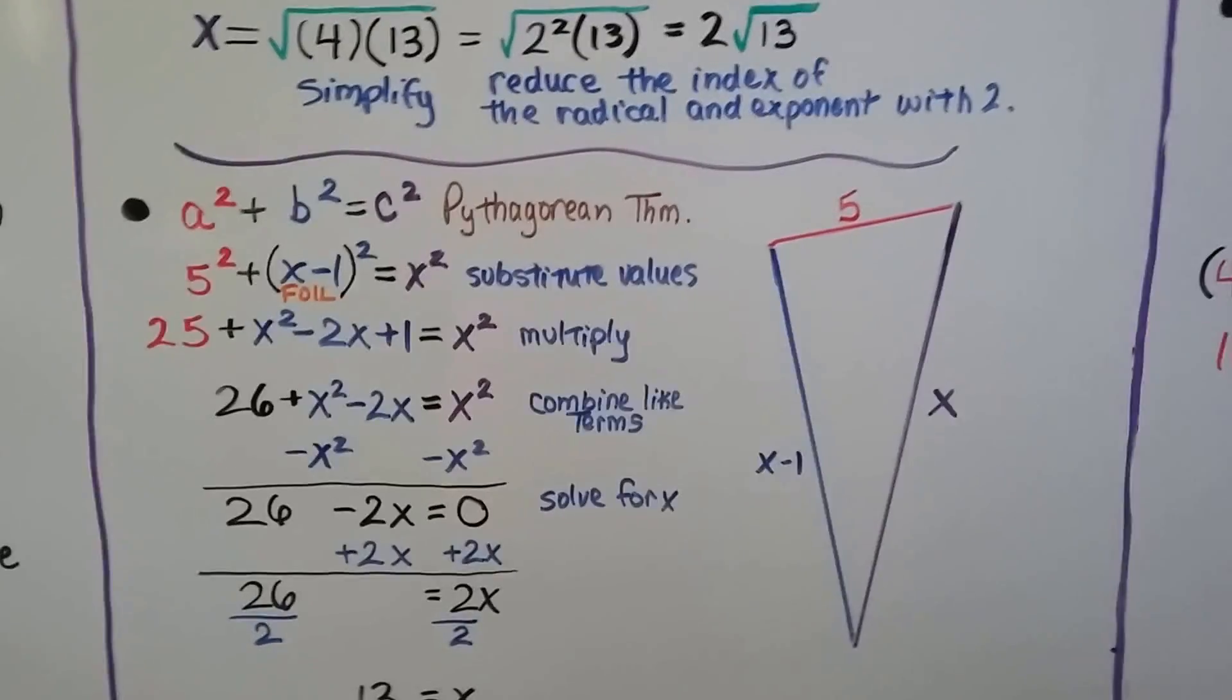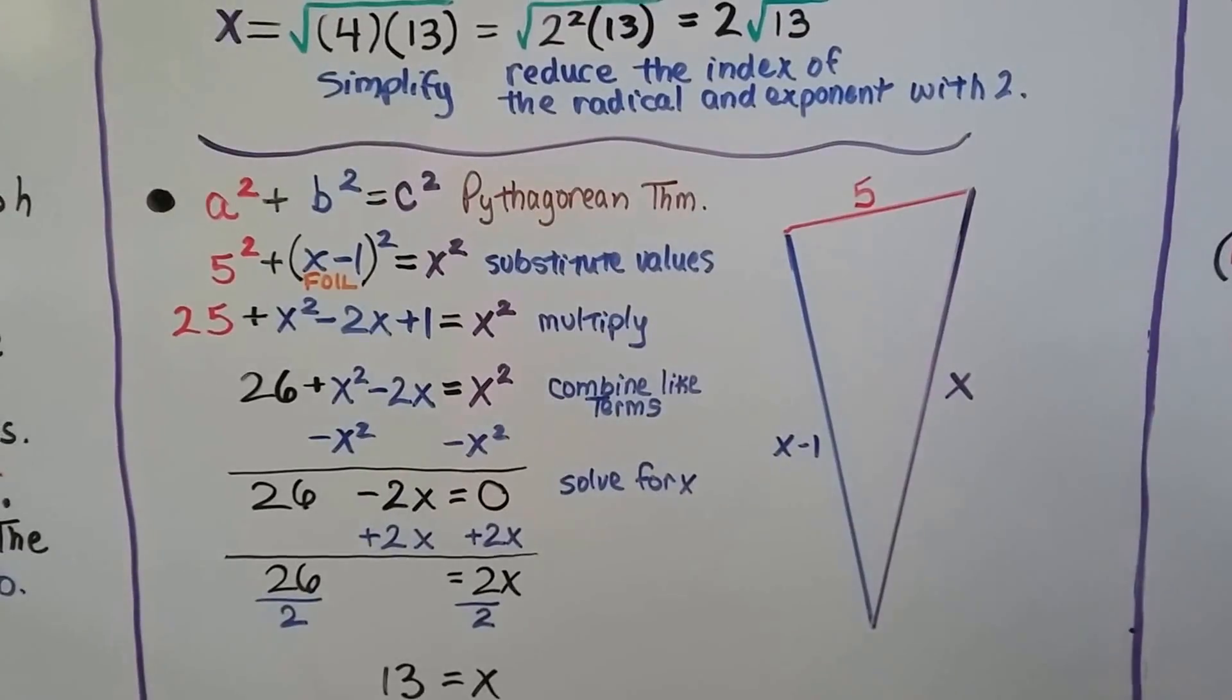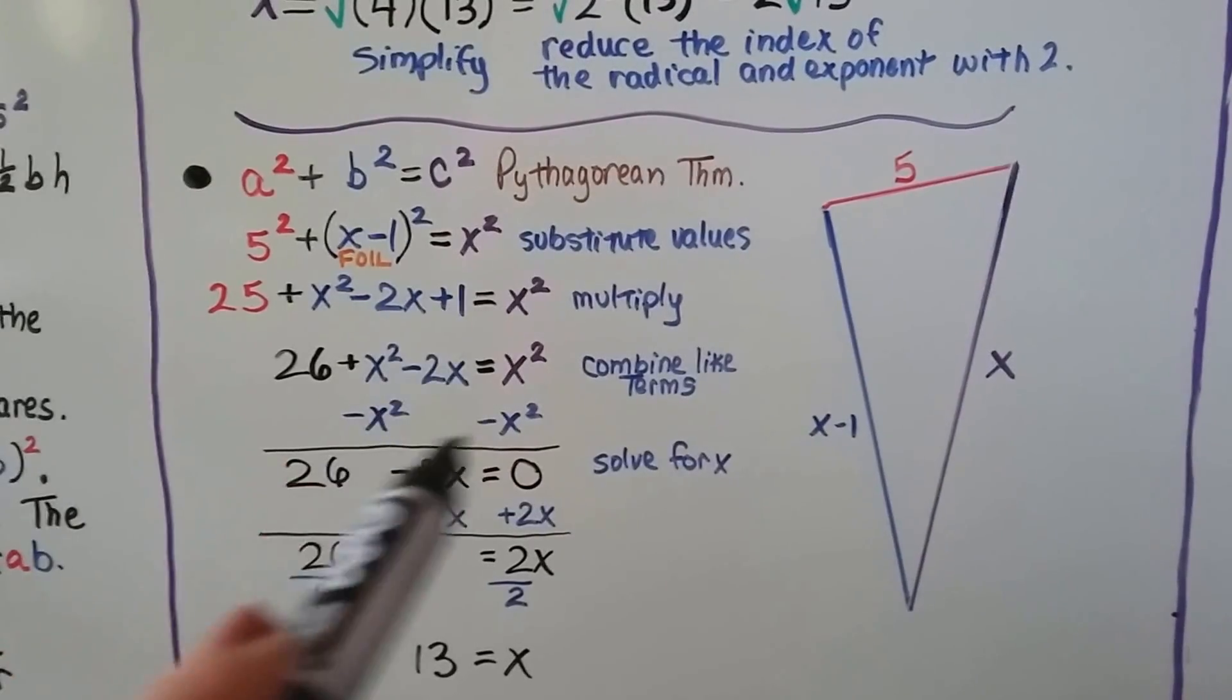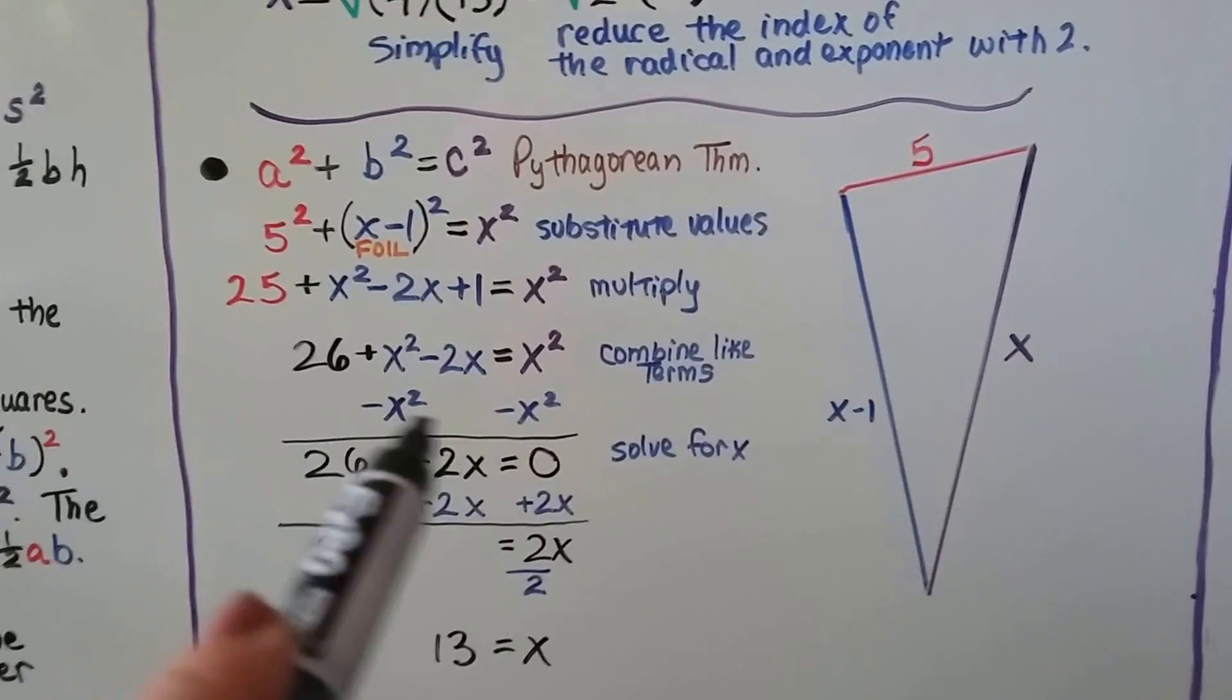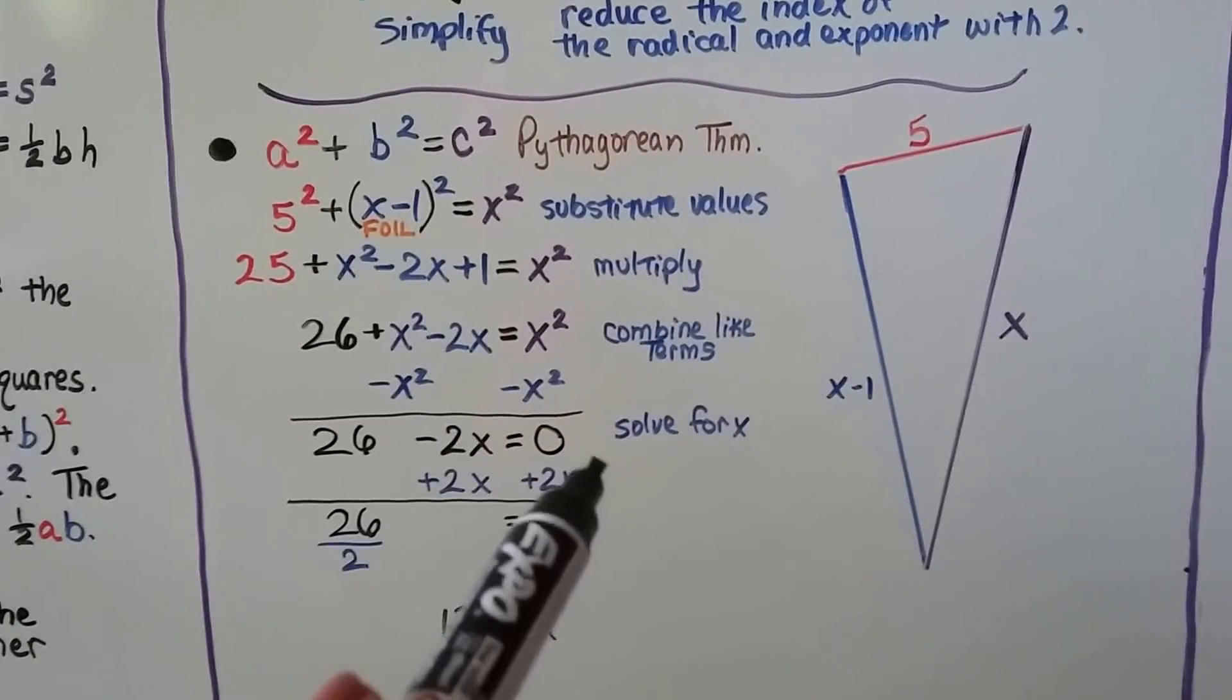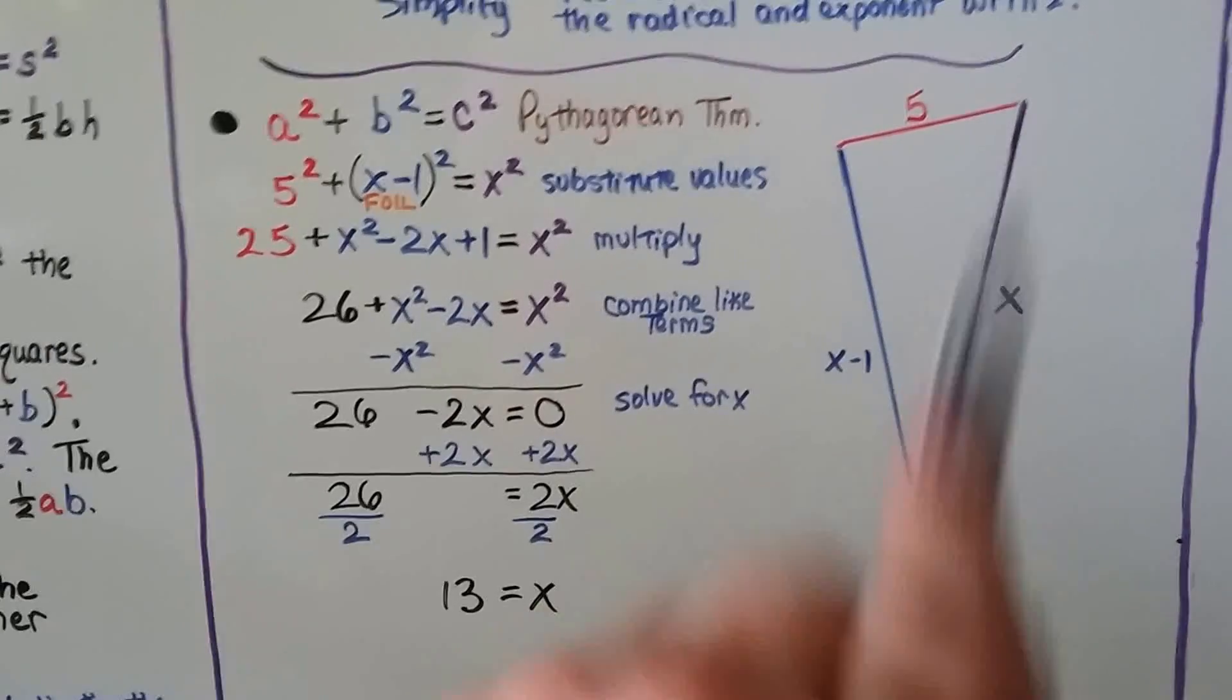And then look at this one. Our a is 5. Our b is x minus 1. And our c is x. So when we substitute them in, we get 5 squared plus x minus 1 squared equals x squared. 5 squared is 25. We foil the x minus 1 squared and get x squared minus 2x plus 1. And that's going to equal the x squared. We can combine this 25 with that 1 and get 26 plus x squared minus 2x equals x squared. We can subtract this x squared from each side of the equal sign and set it to equal 0. Then we'll eliminate them and have 26 minus 2x equals 0. We can add 2x to both sides of the equation. And we'll get 26 equals 2x. We can divide both sides by this 2 coefficient. And we know that 13 equals x. So our hypotenuse is 13.